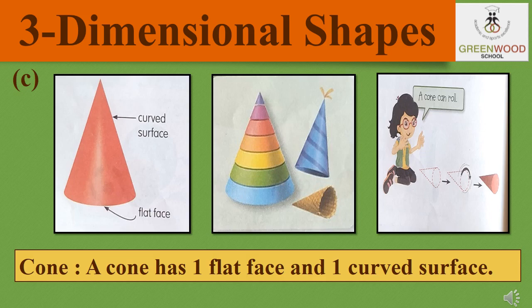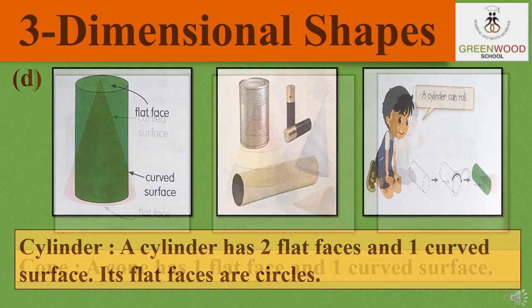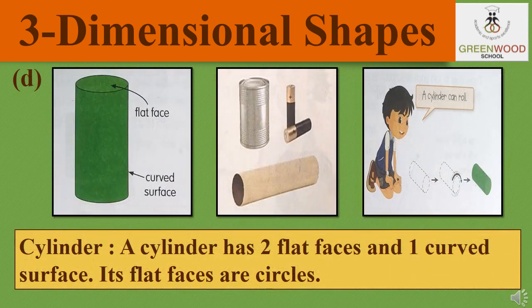The third one is cone. It is made up of a curved surface and one flat face. A cone can roll because it is made up of a curved surface. The fourth one is cylinder. A cylinder has two flat faces and one curved surface. Its flat faces are circles. As it is made up of a curved surface, a cylinder can also roll.